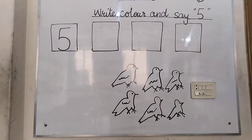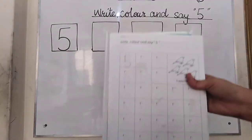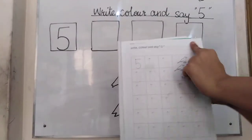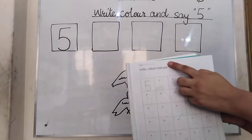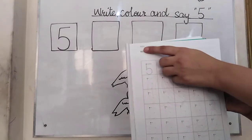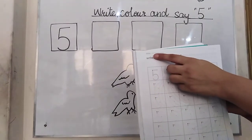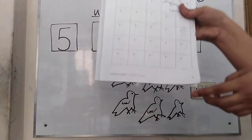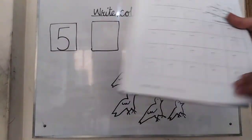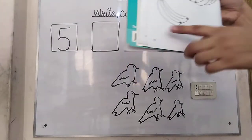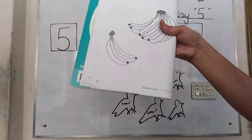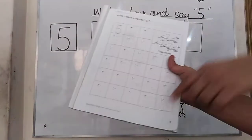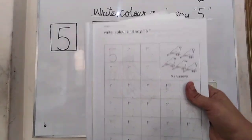Everyone write your date. Which day is today? Today is Tuesday. Write CW and mention your date: 23rd June 2020. Page number 9 is your Classwork and page number 10 is your Homework.